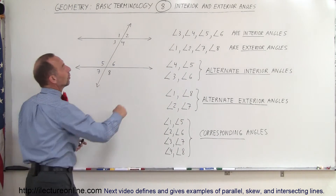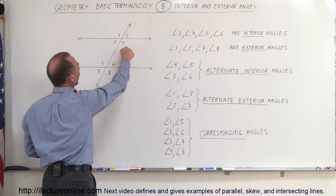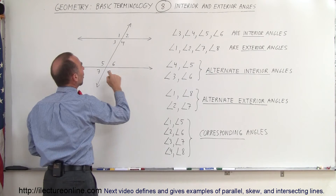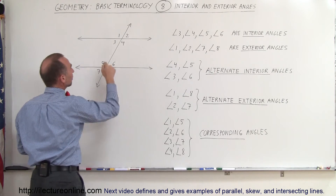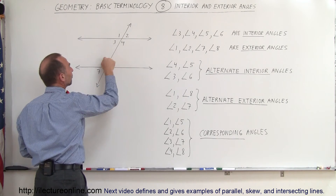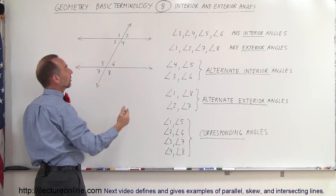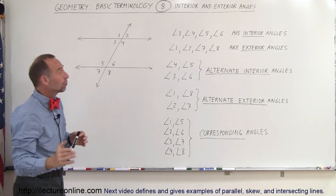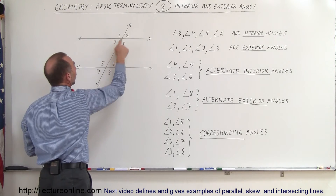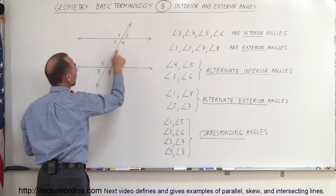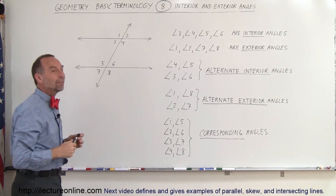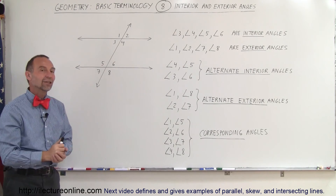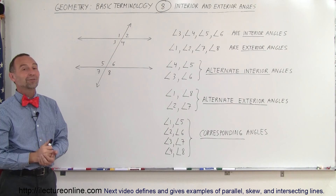So in summary, we have the interior angles: 3, 4, 5, and 6. We have the exterior angles: 1, 2, 7, and 8. We have the alternate interior angles: 3 and 6, and 4 and 5. We have the alternate exterior angles: 1 and 8, and 2 and 7. And finally the corresponding angles: 1 and 5, 2 and 6, 3 and 7, and 4 and 8. Those are the naming conventions we use in geometry to describe angles in this particular format. And that's how it's done.